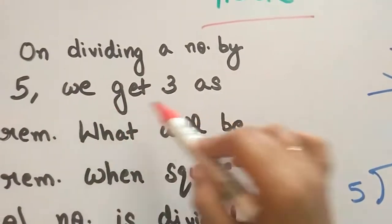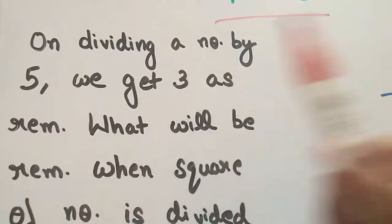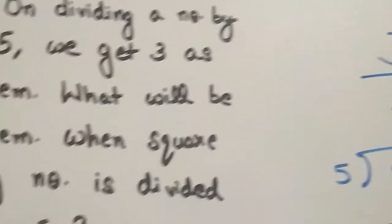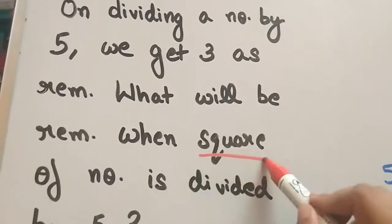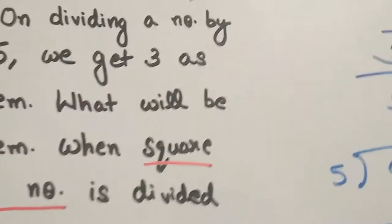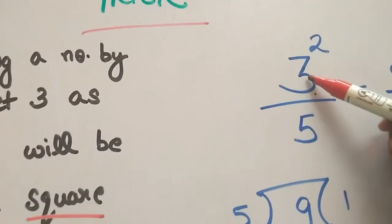dividing a number by 5 we get 3 as a remainder, so just write 3. What will be the remainder when square of a number is divided? We are asked when the square of a number is divided, so just make the remainder which is given as square.